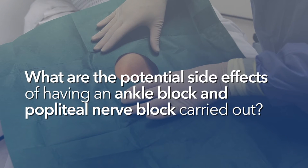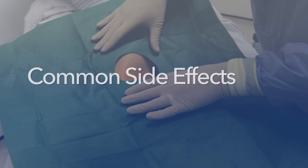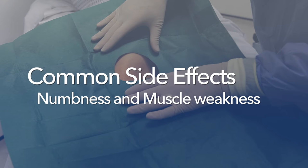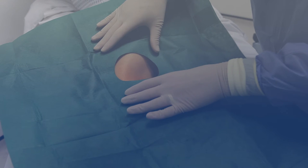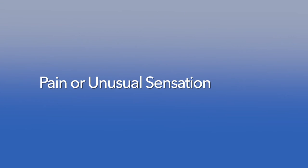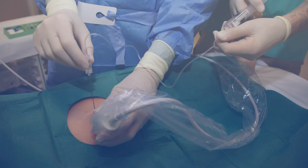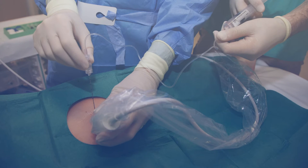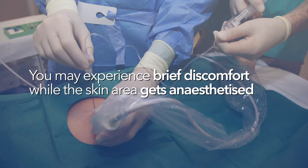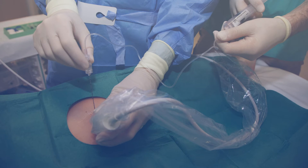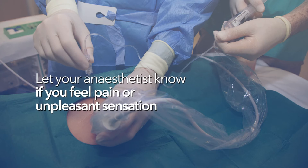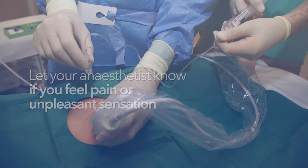What are the potential side effects of having an ankle block or a popliteal nerve block carried out? Common side effects include numbness and muscle weakness of your operated leg. This is a common side effect that will disappear when the local anaesthetic wears off. You may also experience pain or unusual sensation during the injection of the local anaesthetic. If your anaesthetist performs the nerve block while you're awake, you may experience brief discomfort whilst they anaesthetise the skin area, and they will explain this to you. Please let the anaesthetist know immediately if you feel any further pain or unpleasant sensation during the injection so that he or she can make the appropriate adjustments to complete the block.